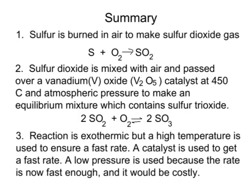Here is a summary of how sulfuric acid is made. First, sulfur is burned in air to make sulfur dioxide gas, or that sulfur dioxide is obtained from somewhere else, for example from the emissions of power stations. The sulfur dioxide is then mixed with air as a source of oxygen, and passed over the vanadium five oxide catalyst at 450 degrees Celsius and at atmospheric pressure to make an equilibrium mixture containing sulfur trioxide, sulfur dioxide, and oxygen all mixed together.